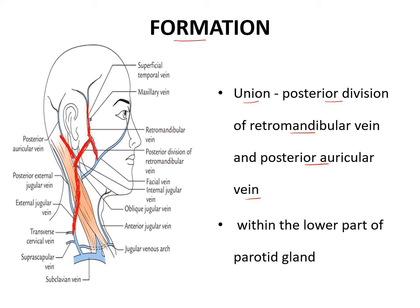This external jugular vein is formed within the lower part of the parotid gland. So within the lower part of the parotid gland, the external jugular vein is formed. That was about the formation.